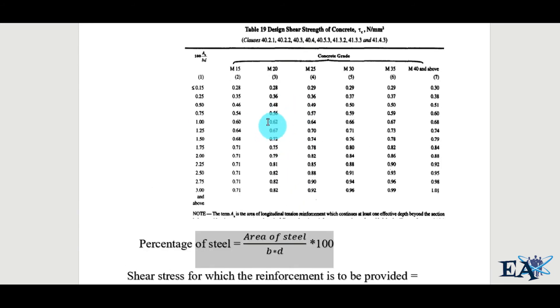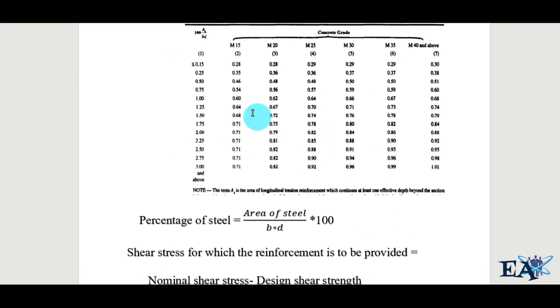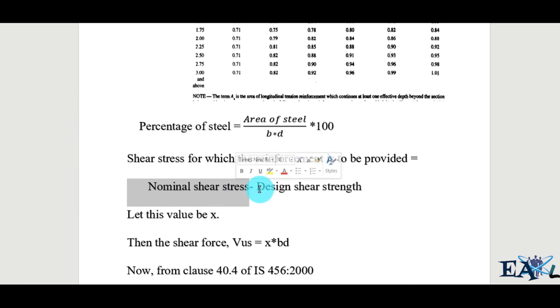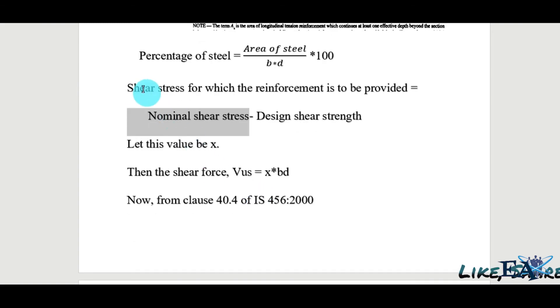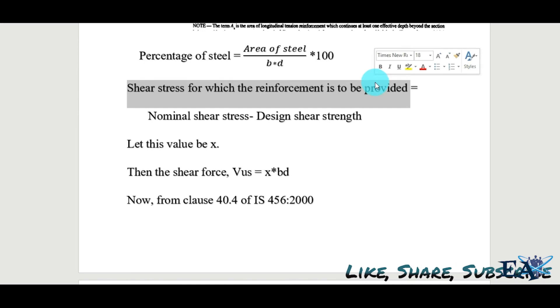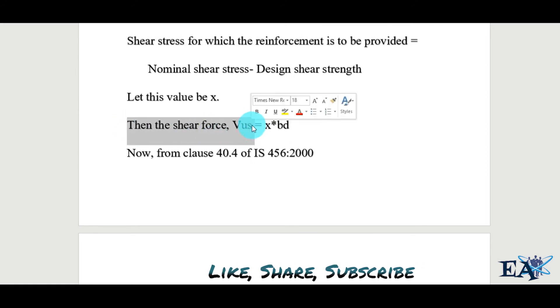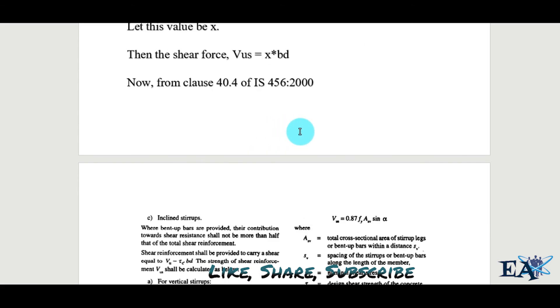The beam already has an inherent shear strength (tau_c from Table 19), while tau_v = 1.5 N/mm² is the shear stress due to external loads. The shear stress for which reinforcement must be provided is: x = tau_v − tau_c. The corresponding shear force for which the stirrups are to be designed is: V_us = x × b × d, since shear force equals shear stress times area.